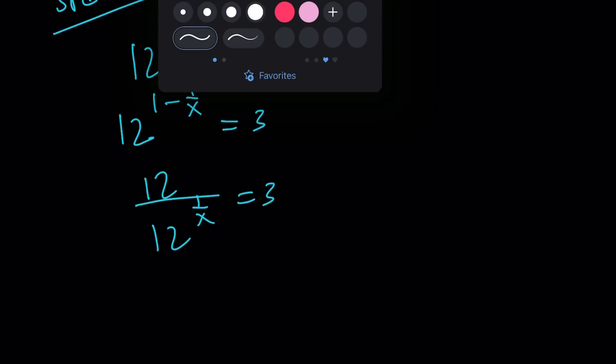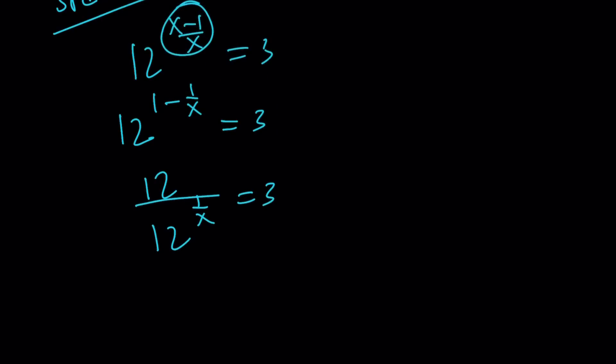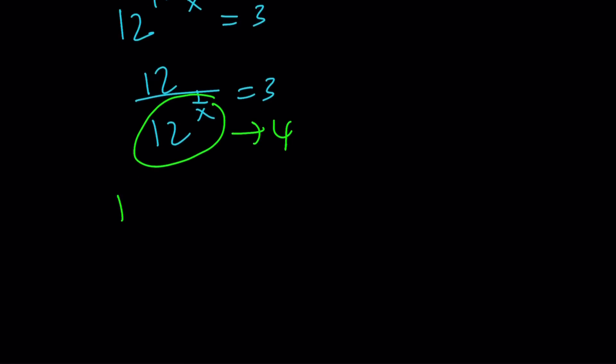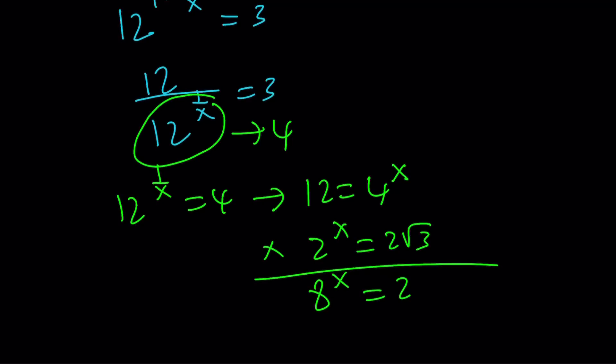Now I can use the formula: 12 divided by 12 to the power 1 over x equals 3. You're thinking, 12 divided by what number equals 3? The answer is 4. So 12 to the power 1 over x must be 4. From here, 12 becomes 4 to the power x if you raise both sides to the power x. Then you proceed as before. 2 to the x equals 2 root 3, and then you multiply these. 8 to the x becomes 24 root 3. So the answer is 24 root 3.